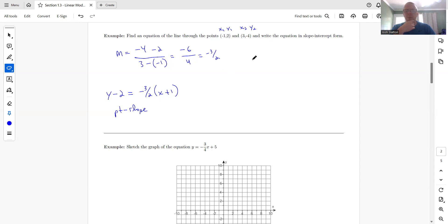Or kind of the way I prefer to do these is write your slope-intercept form. And we know the slope is negative 3 halves. Now plug in one of the points for x and y. So we'll use this one this time. So the y is negative 4. The slope is negative 3 halves. x is 3. And now solve for b. So we get negative 4 equals negative 9 halves plus b. And we get the b is 1 half.